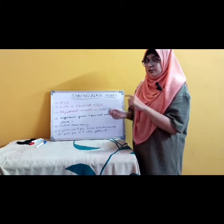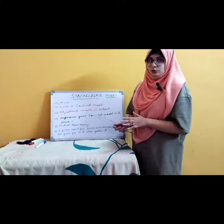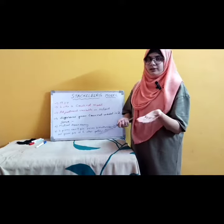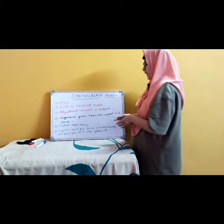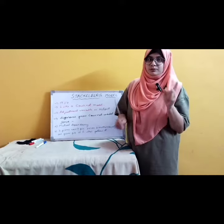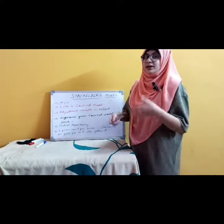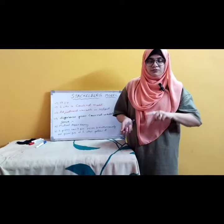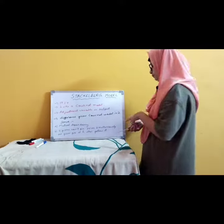The first difference is mutual dependency. In the Cournot model, firms assumed that the output of one firm will not affect the output of the second firm. But in Stackelberg, it is assumed that the output of one firm will affect the output of the second firm. The second difference is that both firms cannot fix their price simultaneously, because they are dependent on each other — one firm fixes the price and the other follows.